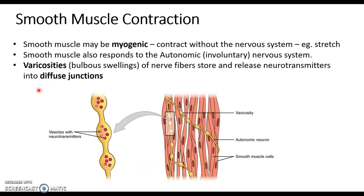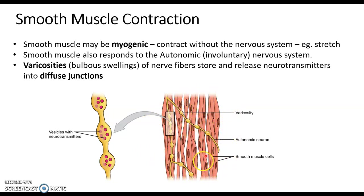In skeletal muscle we have neuromuscular junctions, where a neuron comes in and synapses with the muscle fiber. In smooth muscle, we don't have these neuromuscular junctions — we typically have diffuse junctions. You see the neuron, but instead of an axon terminal, there are varicosities, which are bulges in the axon that stimulate the smooth muscle. So instead of a very specific synapse, we have varicosities spread generally over the smooth muscle tissue, releasing neurotransmitters diffusely across the entire area.